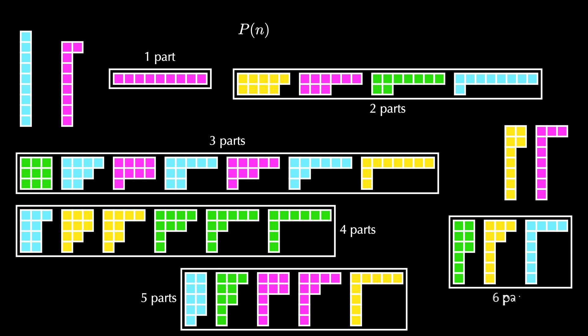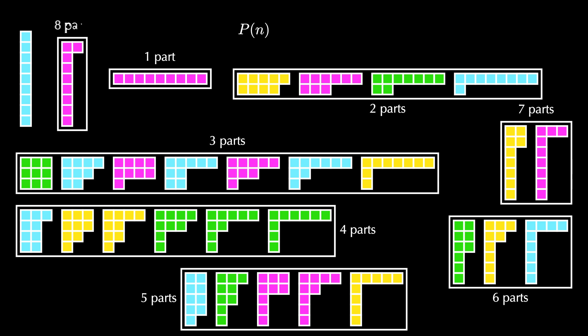The smallest number of parts a partition can have is 1, and the largest number of parts it can have is n, where each part has size 1. This visual shows us that the number of partitions of n is equal to the sum of the number of partitions of n into k parts, where k ranges from 1 to n.